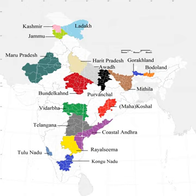There have been demands for a Bojpur state comprising the Bojpuri-speaking districts of western Bihar, eastern Uttar Pradesh and northern Chhattisgarh and Jharkhand.